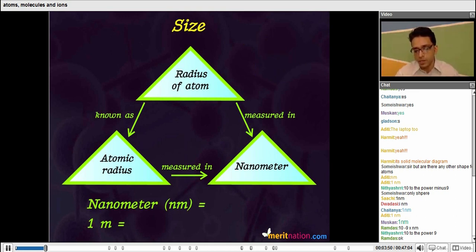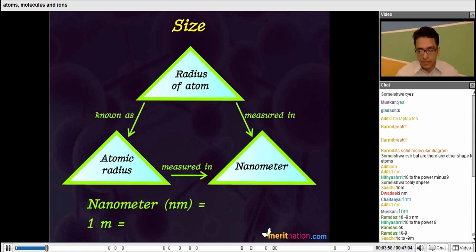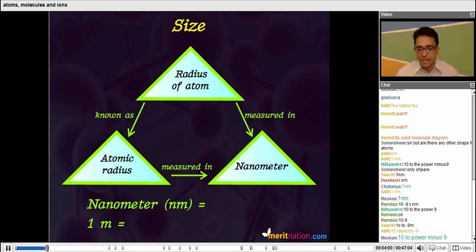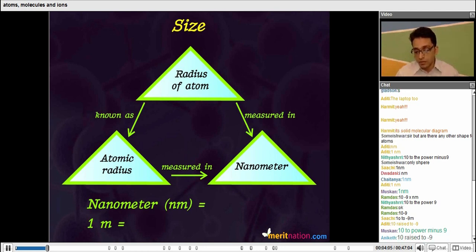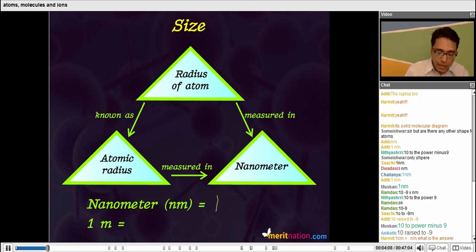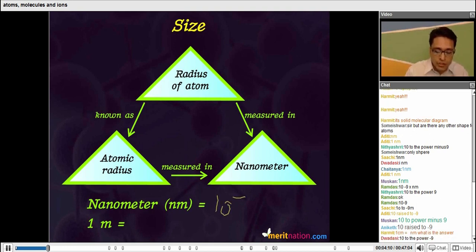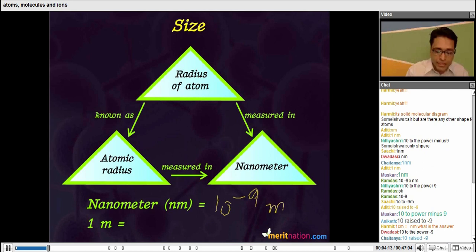One nanometer is equal to... yes, it's 10 to the power of minus 9 meters. So it's 1 divided by so many zeros, and we write here that one nanometer is 10 to the power of minus 9 meters.